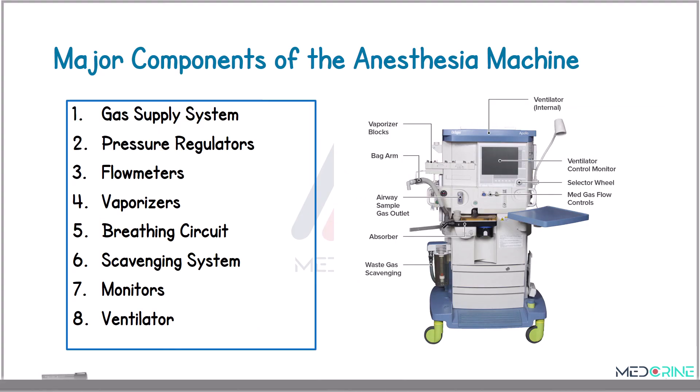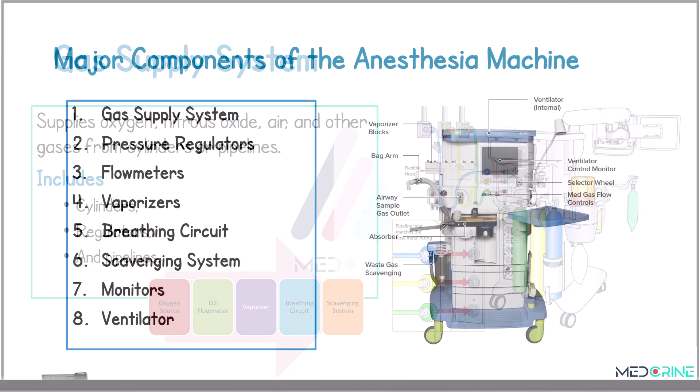The major components of the anesthesia machine include the gas supply system, the pressure regulators, flow meters, vaporizers, the breathing circuit, the scavenging system, monitors, and a ventilator. Each component plays a vital role in safe and effective anesthesia delivery.